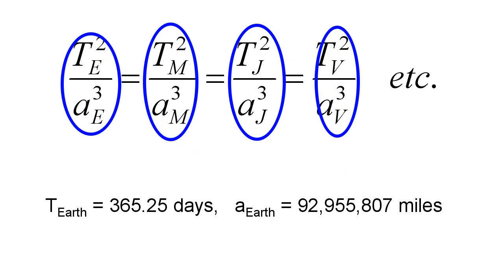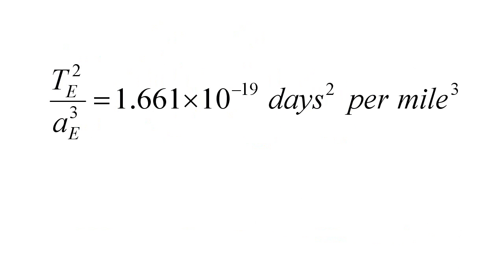For the Earth, we have this value for T and this value for A. What does this work out to be? We get 1.661 times 10 to the minus 19 day squared per miles cubed. This turns out not to be very convenient, so let's switch units.